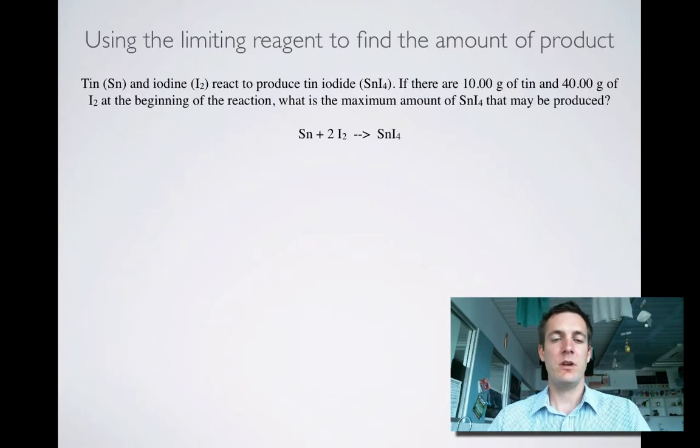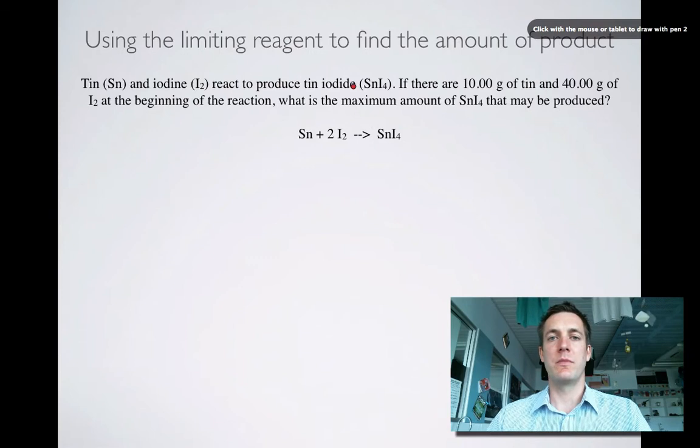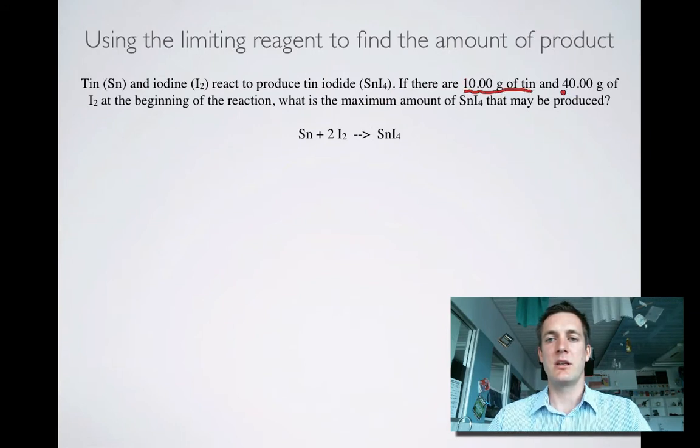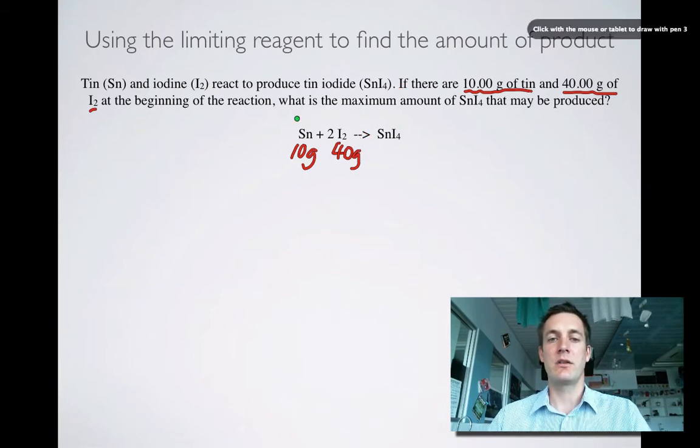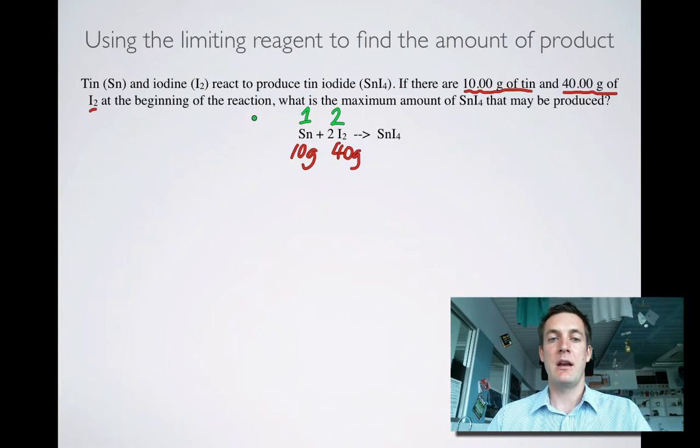So here we go. Here is our practice problem. One question people often ask is, how do I know a question is a limiting reagent question if it doesn't say anything about limiting reagent? Well, a good way to think of that is to say to yourself, if I'm given information about two of the reactants, so here I'm given information about tin and the iodine, then there's a very good chance it's a limiting reagent question. Sometimes it will just say what's the limiting reagent, but if it doesn't, this is how to spot one. It's a stoichiometry problem, so I'm going to think about the fact that I've got a 1 to 2 mole ratio here, and I'm being asked about the maximum amount of tin iodide, so I'm going to think about the mole ratio of that as well. So I've got 1, 2, 1.